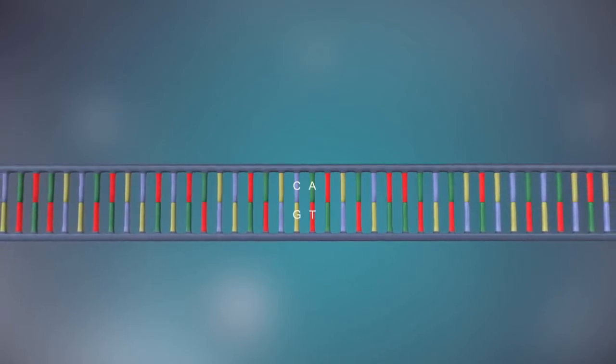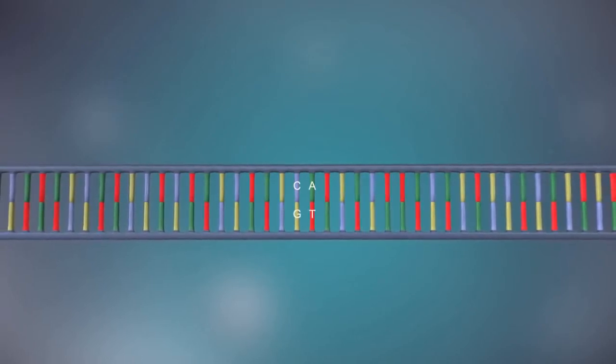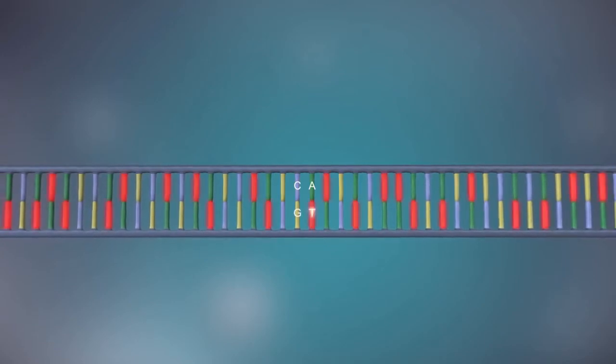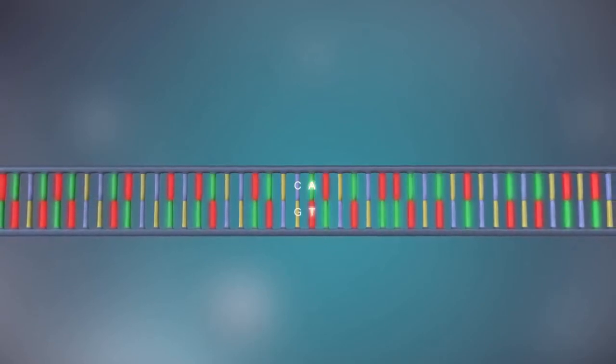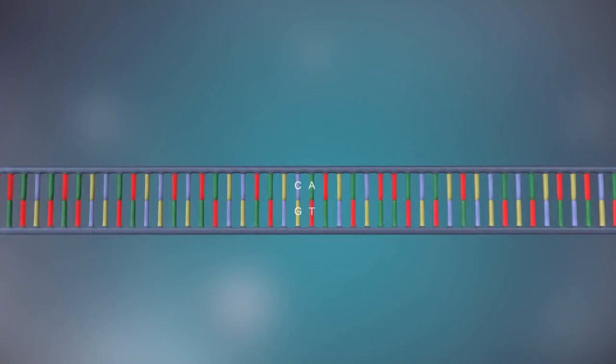The two strands are complementary. This means that wherever there is a T in one strand, there will be an A in the other strand, and wherever there is a C, there will be a G in the other strand.